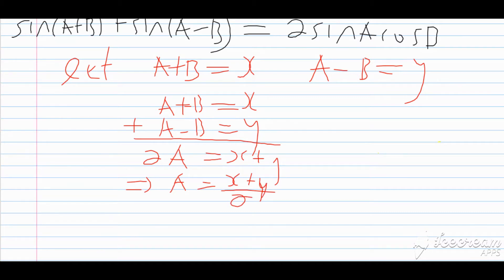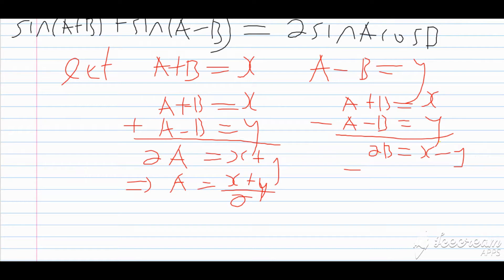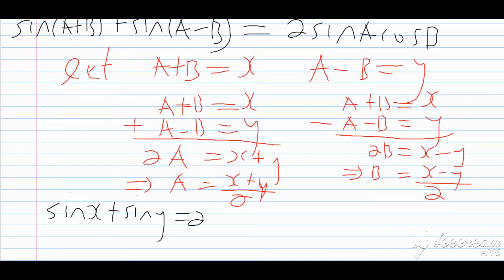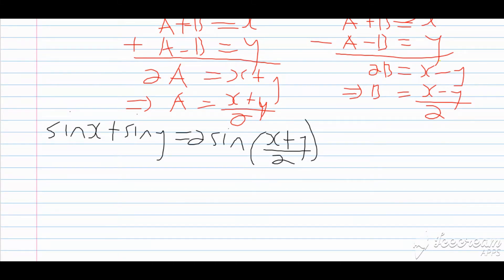Now let us subtract the two expressions. We have A plus B equal X and A minus B equal Y. When I subtract them, the A's cancel, and B minus negative B gives 2B equal to X minus Y, which implies B equals X minus Y over 2. We now plug these back into the original expression, bearing in mind that A plus B equals X and A minus B equals Y. This gives us sine of X plus sine of Y equal to 2 sine of (X plus Y)/2 cosine of (X minus Y)/2.